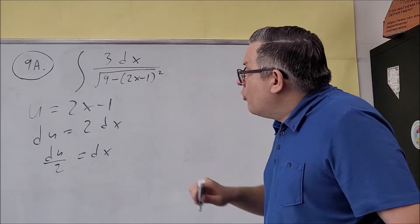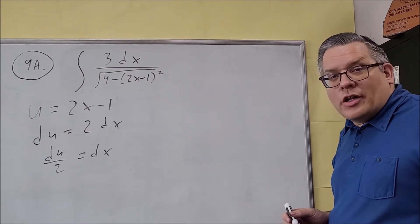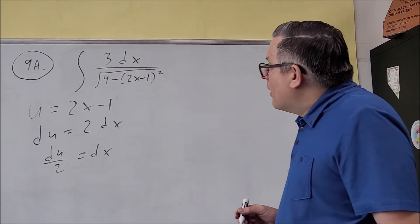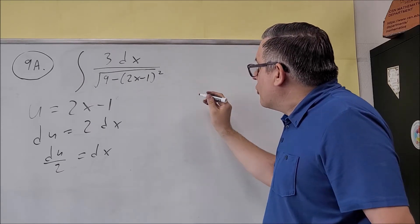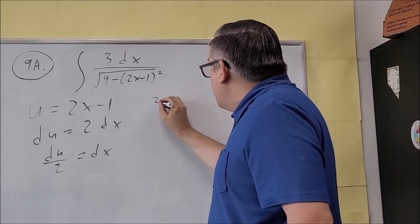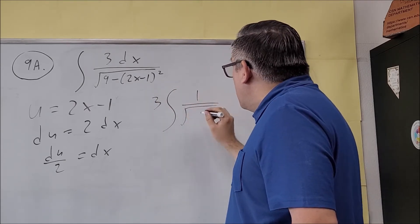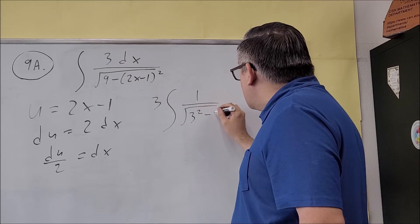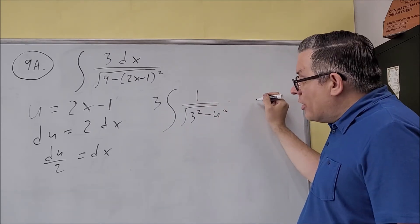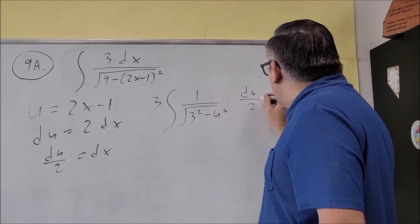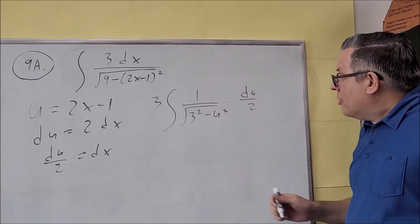Now the 9, we can write that as 3 squared because that's required on this kind of problem. Let's rewrite this. So what I'm going to do, first of all, I'm going to put the 3 outside like that. And then I have square root of 3 squared minus u squared. I'm going to put the dx out right here. So that's what's going to be du over 2. So I kind of just move the dx out of there and put that here.